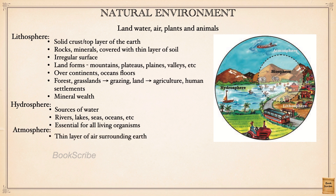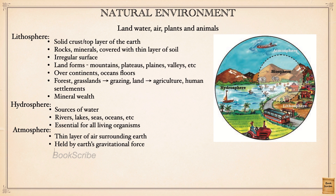Surrounding our earth there is a thin layer of air called the atmosphere. Since it is very thin and light it could escape, but the atmosphere does not escape because of the gravitational force of the earth, which pulls and holds it over the earth's surface. The atmosphere protects us from the harmful rays of the sun and from the intense heat of the sun.